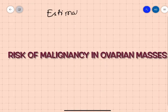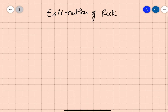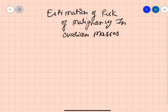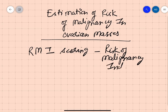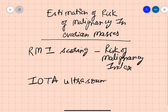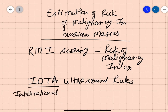We are going to discuss estimation of risk of malignancy in ovarian masses. There are two ways to do it. One is RMI scoring — RMI means Risk of Malignancy Index — and the other is IOTA ultrasound rules. IOTA stands for International Ovarian Tumor Analysis Group.